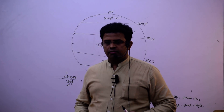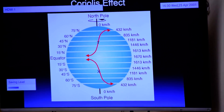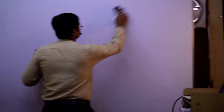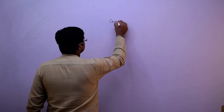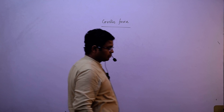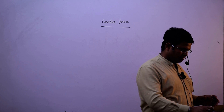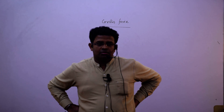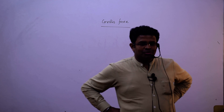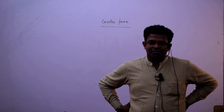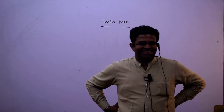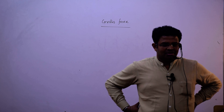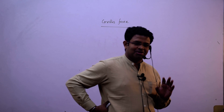Next we are going to see Coriolis force. If you have moved on a train, you must have traveled with your friends. If the train is moving at 120 km per hour, then your speed is also 120 km per hour and your brother or sister's speed is also the same. What do you do with the ball?